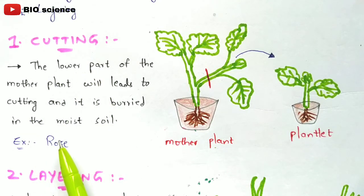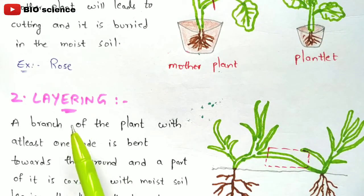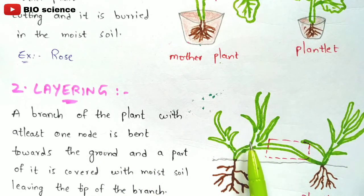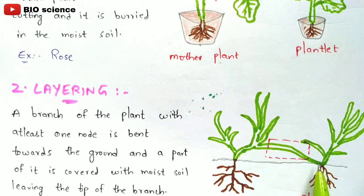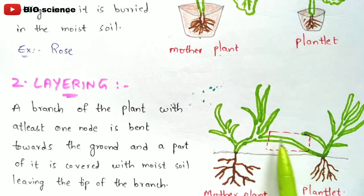In layering, a branch of the plant with at least one node is bent toward the ground and a part of it is covered with moist soil, leaving the tip of the branch exposed. Human beings must push this branch toward the soil, after which the root system and shoot system develop, forming a new plantlet from the mother plant.